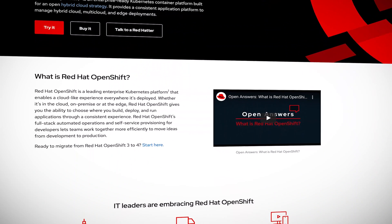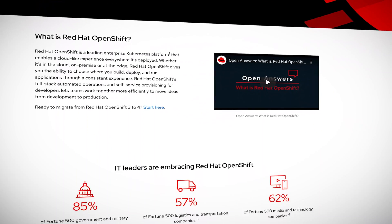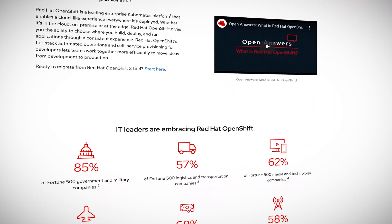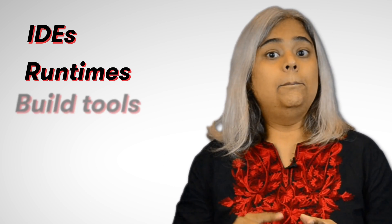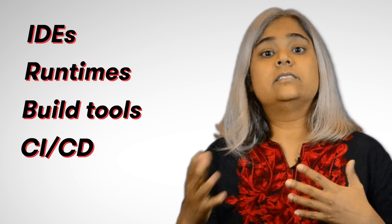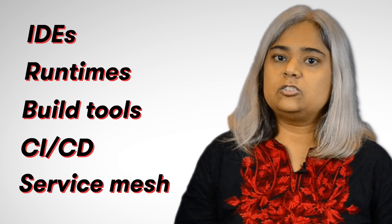If you're looking for more turnkey solutions using Kubernetes, Red Hat OpenShift is a platform-as-a-service offering that provides OpenShift build and deployment tools in addition to Kubernetes. It's built on a Kubernetes core but also offers IDEs, runtimes, build tools, CI/CD services, a service mesh, and much more. Red Hat OpenShift is available as a service on both AWS and Azure, but not on GCP.